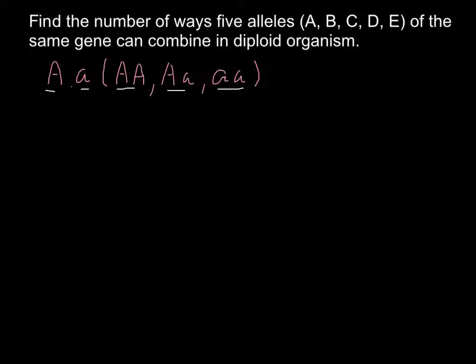And these three genotypes would produce two phenotypes. So in simple Mendelian genetics that is one phenotype and this one is the second one. So three genotypes and two phenotypes.